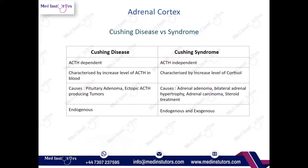Cushing's syndrome is characterized by increased cortisol rather than increased ACTH, because the cause lies within the adrenal gland itself — it may be adrenal adenoma, bilateral adrenal hypertrophy, adrenal carcinoma, or steroid treatment. It may be endogenous or exogenous. In the exam, if asked the most common exogenous cause of Cushing's syndrome, the answer is exogenous steroid treatment or pharmacological steroid use.